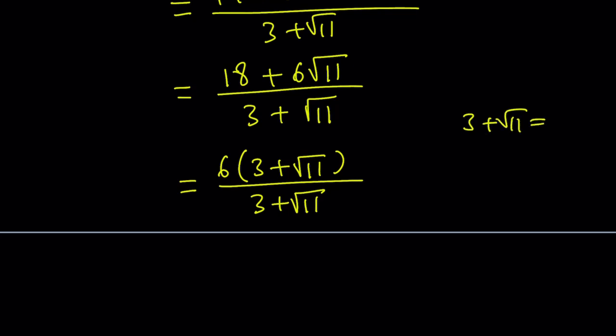It's what's at the bottom. So 3 plus root 11 obviously does not equal 0. So these two terms cancel out, leaving us with 6, which is the value of x minus 2 over x.